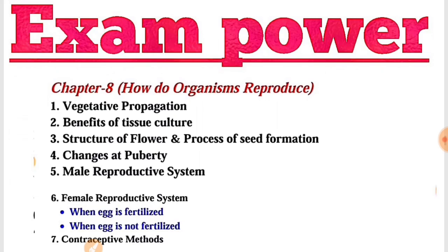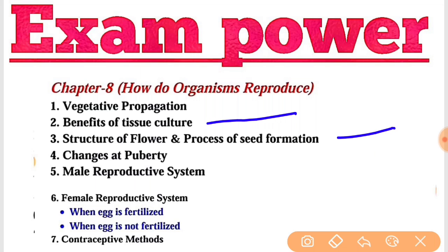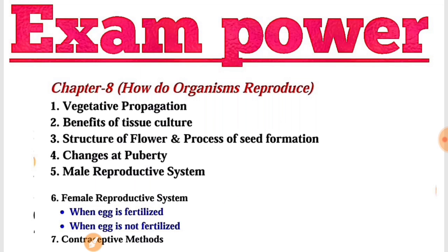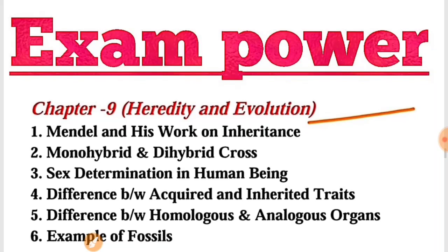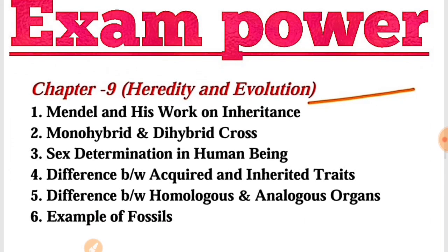Chapter Number 8 — How do Organisms Reproduce। इसमें Vegetative Propagation, Benefits of Tissue Culture, Structure of Flower and Process — ये सारे important topics हैं जिनमें से question पूछे जा सकते हैं। Chapter Number 9 में भी important topics हैं जिनमें से question पूछे जा सकते हैं, तो इनको पढ़िए और अच्छे से तैयार कीजिए ताकि exam में अच्छे marks आएं।